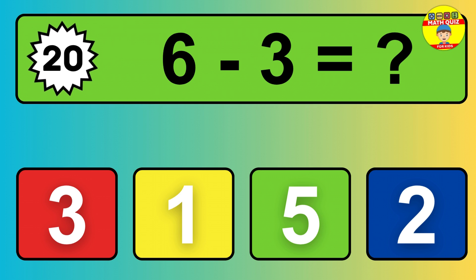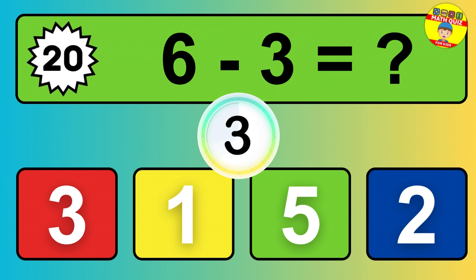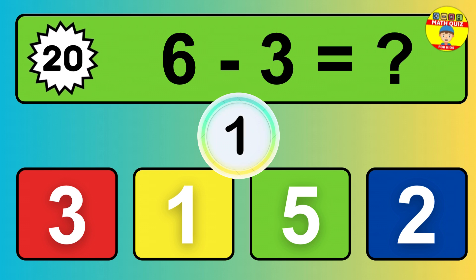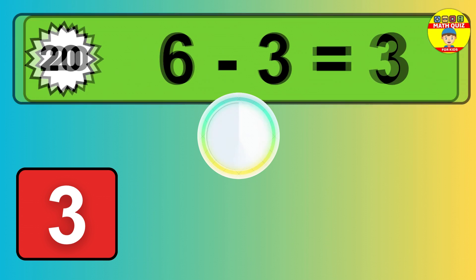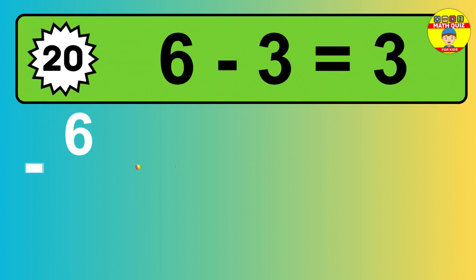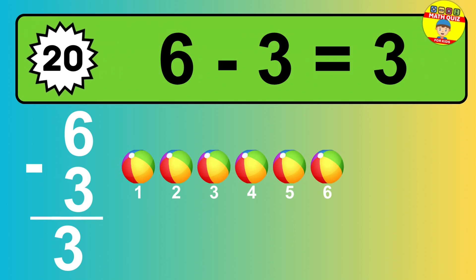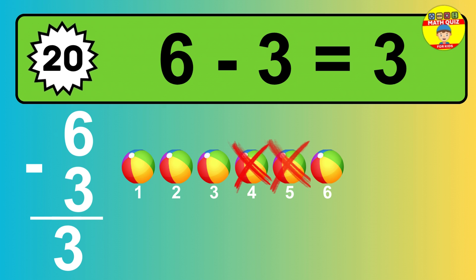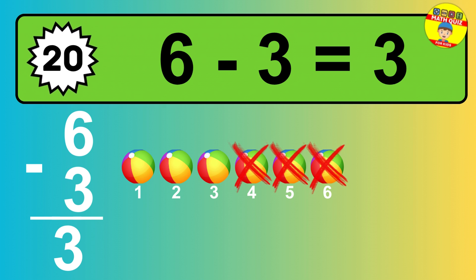Question twenty: six minus three equals what? So the answer is, six minus three is three. Let's count it. One, two, three.